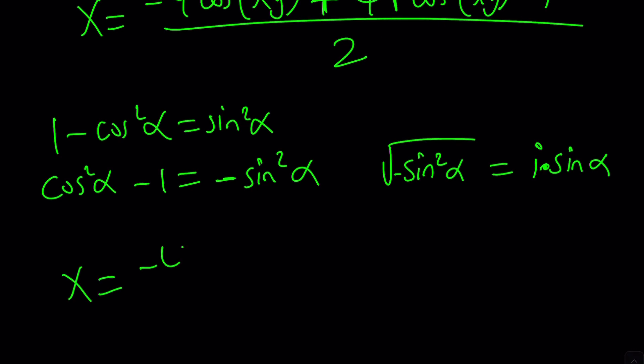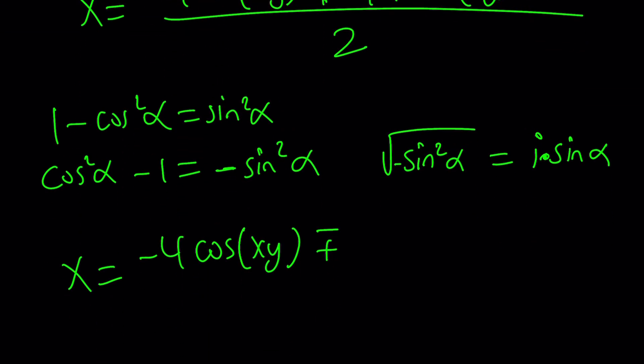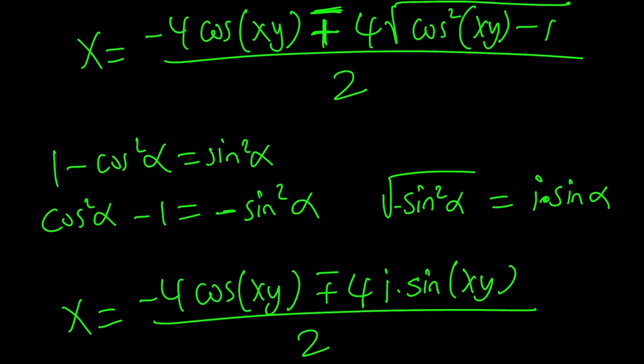Alpha is xy in this case, so let's go ahead and rewrite this. Negative 4 cosine xy plus minus 4 times i times sine xy. And all of that is divided by 2.